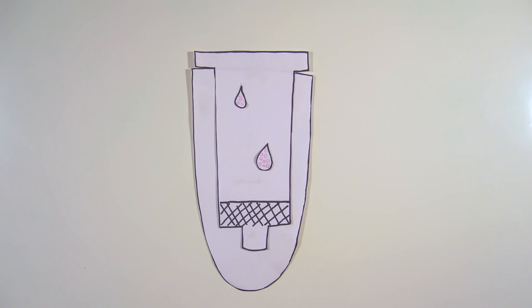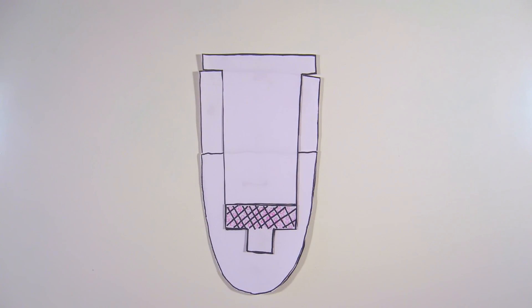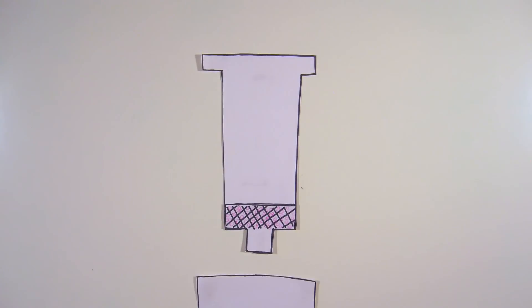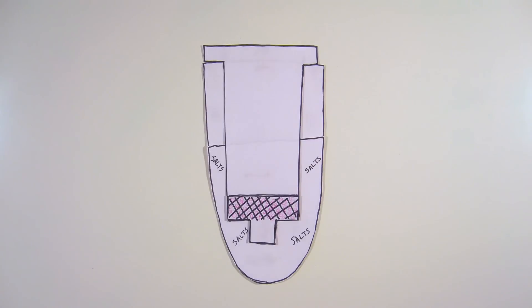The supernatant containing the plasmid DNA is passed through a spin column containing a silica matrix. The plasmid DNA binds to the silica matrix, while the rest of the supernatant passes through the column and is discarded. The column is then washed with wash buffer to remove any remaining contaminants.